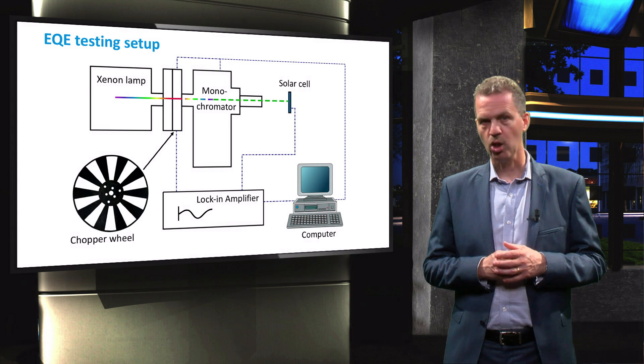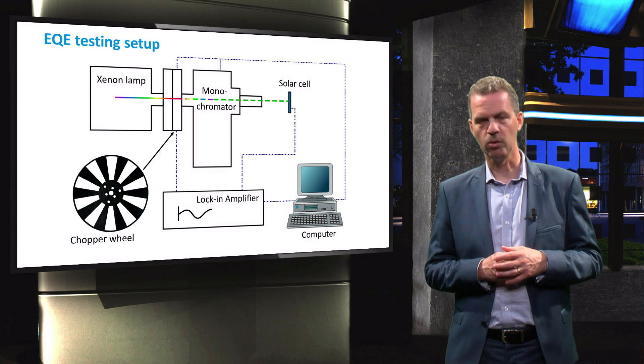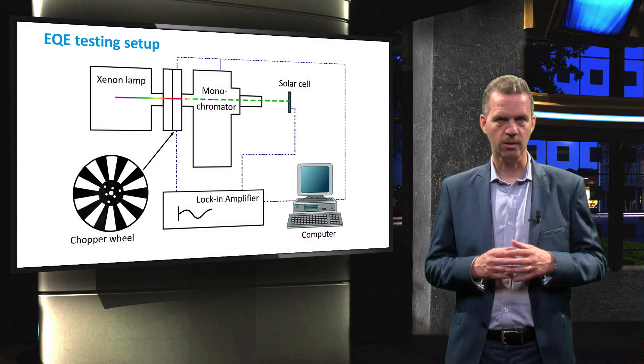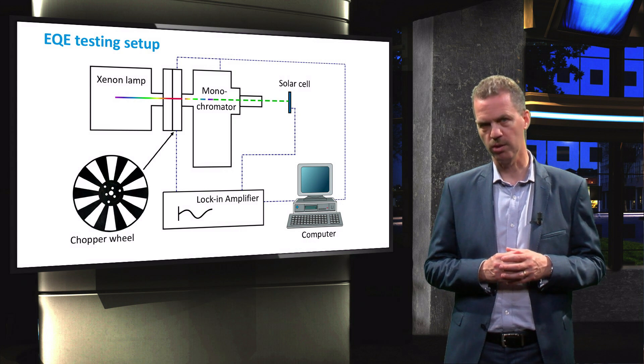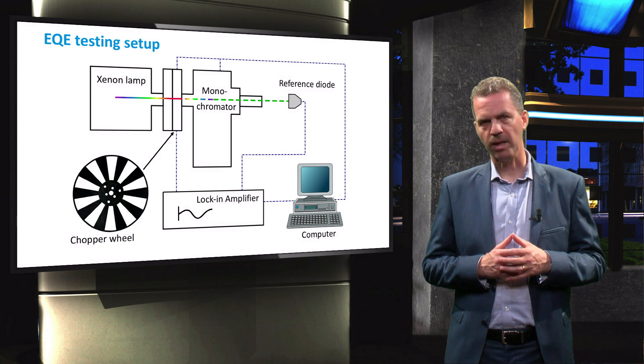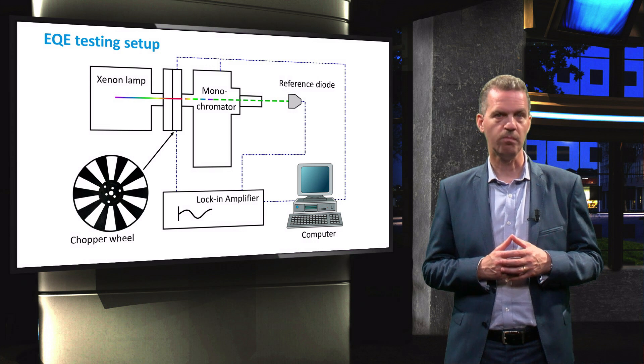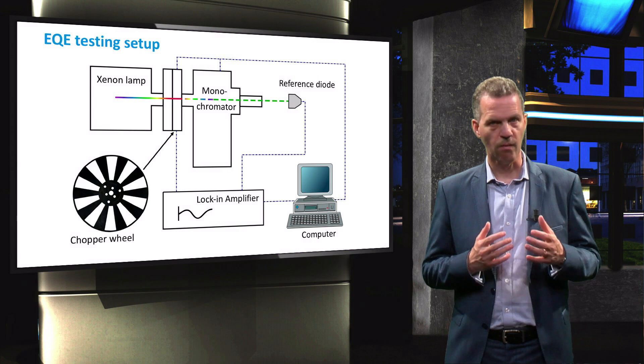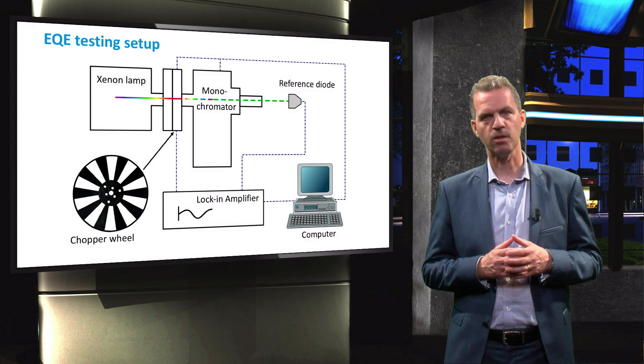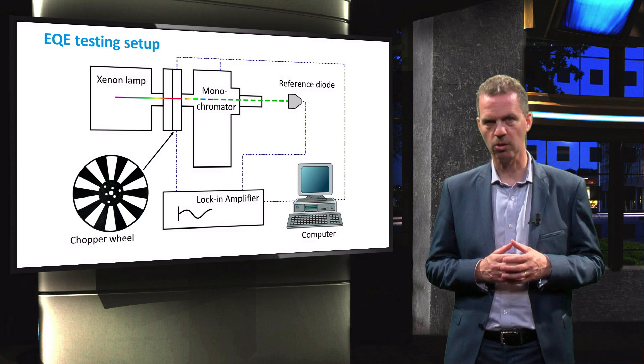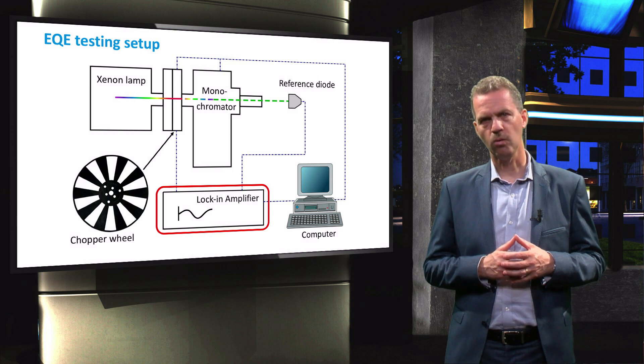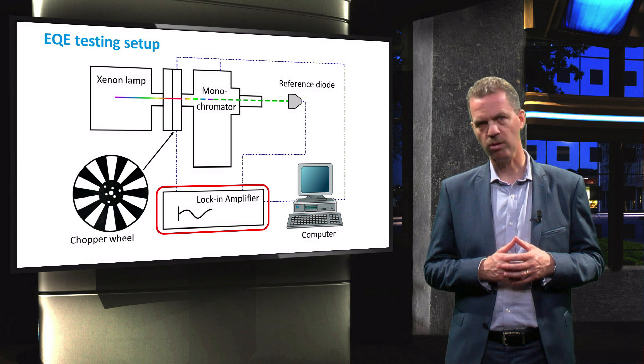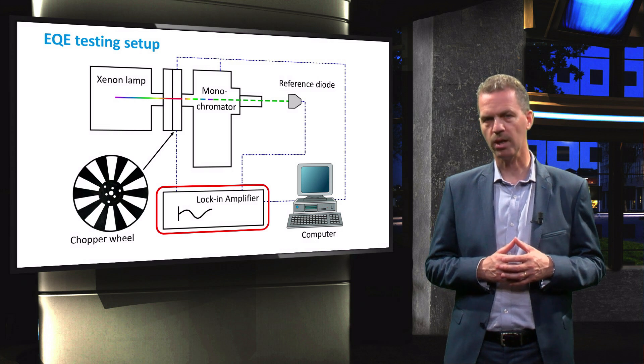The monochromator, chopper wheel, and lock-in amplifier are usually all controlled by a computer, which programs the setup to scan through the entire light spectrum and measure the response of the solar cell. Since the spectral photon flux of the lamp should be known very accurately, a reference diode with a calibrated spectral response is measured prior to measuring the solar cell under test. We will now go into a little bit more detail on the method to retrieve the signal with a lock-in amplifier.